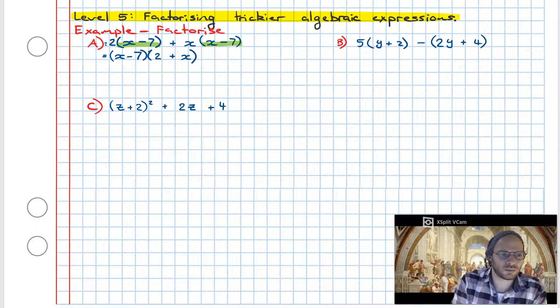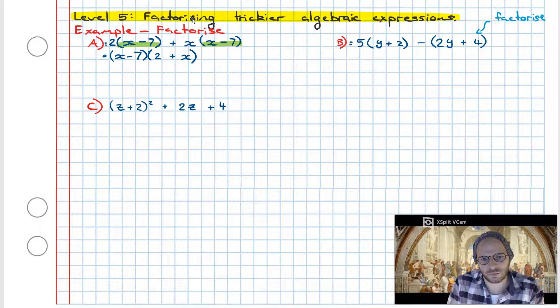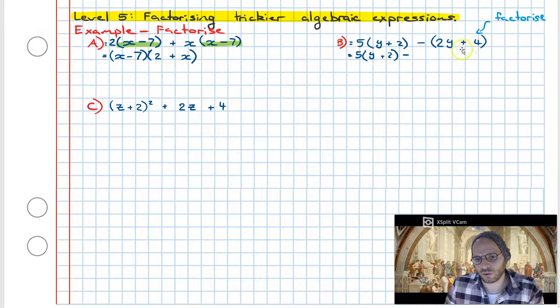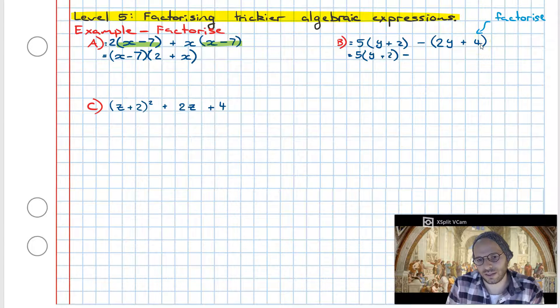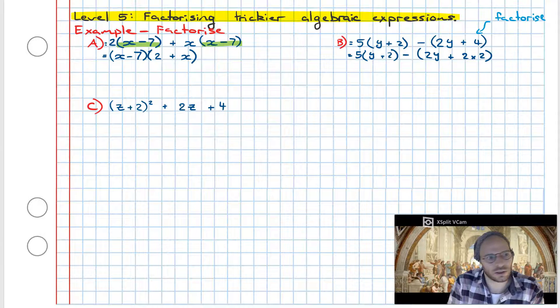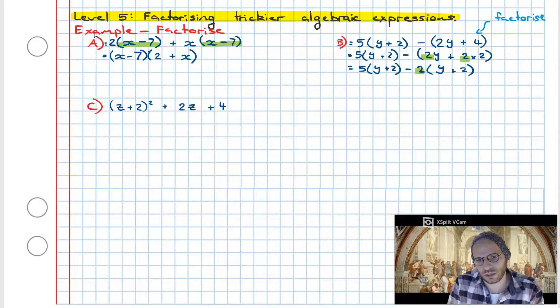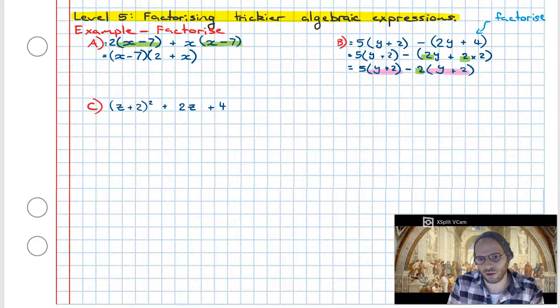So what we're going to do to begin with is factorize this second term. Factorizing the second term, our first term is unchanged. But our second term, notice how we've got a 2y and a 4 in here. The factors of 4 are 2 and 2. So what that means is we can break this down into 2y plus 2 times 2 and we can pull out the 2 over here and the 2 here. Pulling the two out we're left with a y plus 2.